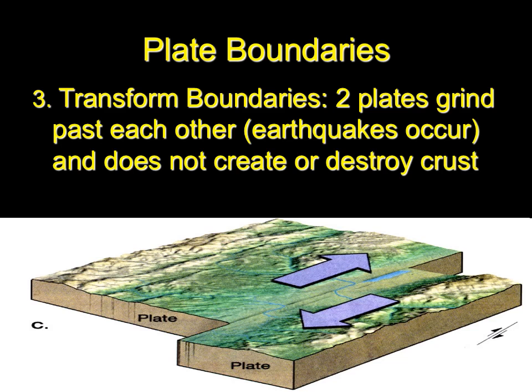The last kind of plate boundary is called transform boundaries. These are when two plates slide past one another — they grind past each other in a very rough and bumpy way, and that's what makes earthquakes happen. Transform boundaries don't destroy or create crust; the plates are just moving past each other.